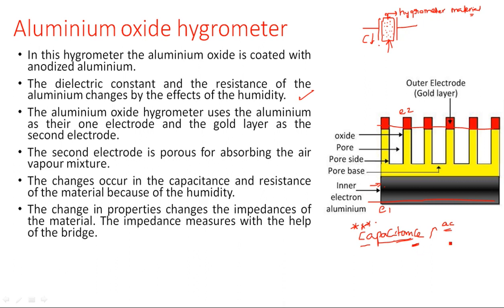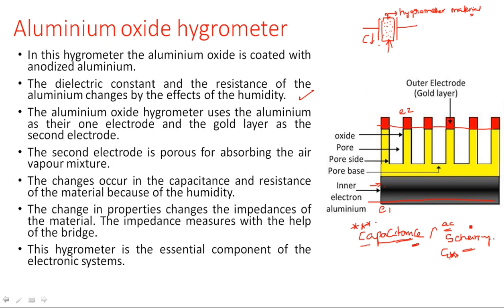Variation in the capacitance can be calculated using a Schering bridge. The Schering bridge is used here to calculate the changes in the capacitance value so that the unknown capacitance which has varied can be determined. The hygrometer is an essential component in all electronic systems.